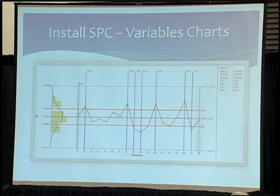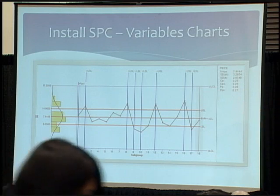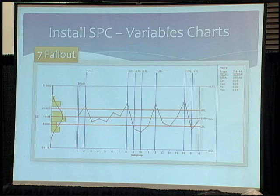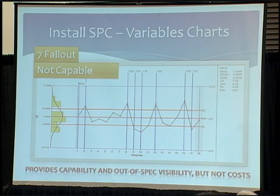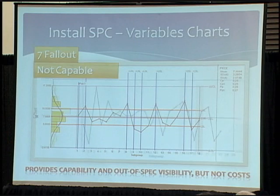Here's your basic run chart. For those of you that are statisticians, you can see I'm dealing with individual X plot points. Mathematically, it's safe to put spec limits on the same chart as control limits. I've got 18 plot points, and I can count how many are out of spec — 7 fallout out of 18. I can see it's not capable. The CPKs on the right-hand side are pretty bad numbers. But this chart really does nothing more than provide capability and out-of-spec visibility. It's not really addressing the cost associated with this type of activity.